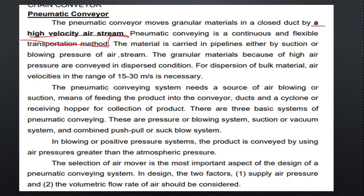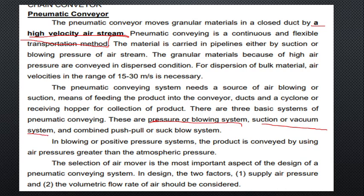The main bulk material velocity is 15 to 30 meters per second. Air blowing or suction feeds the conveyor ducts into a cyclone or a receiving hopper for collecting products. There are three basic types: pressure or blowing system, suction vacuum system, and combined or push-pull system.